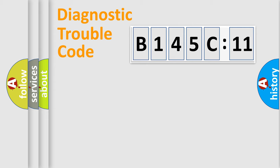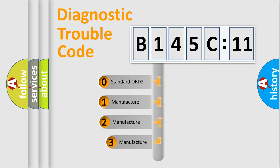Powertrain, Body, Chassis, Network. This distribution is defined in the first character code.